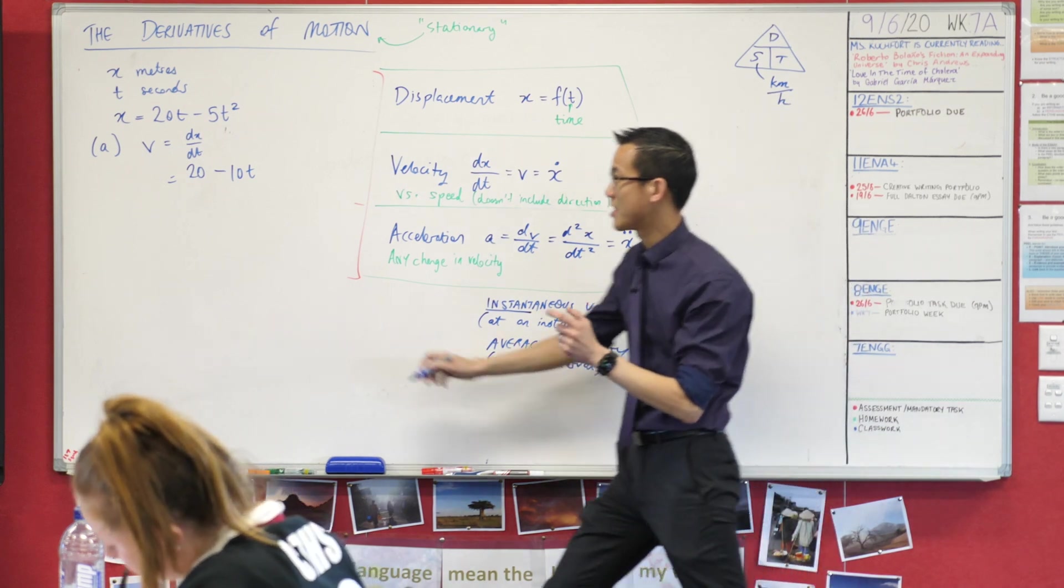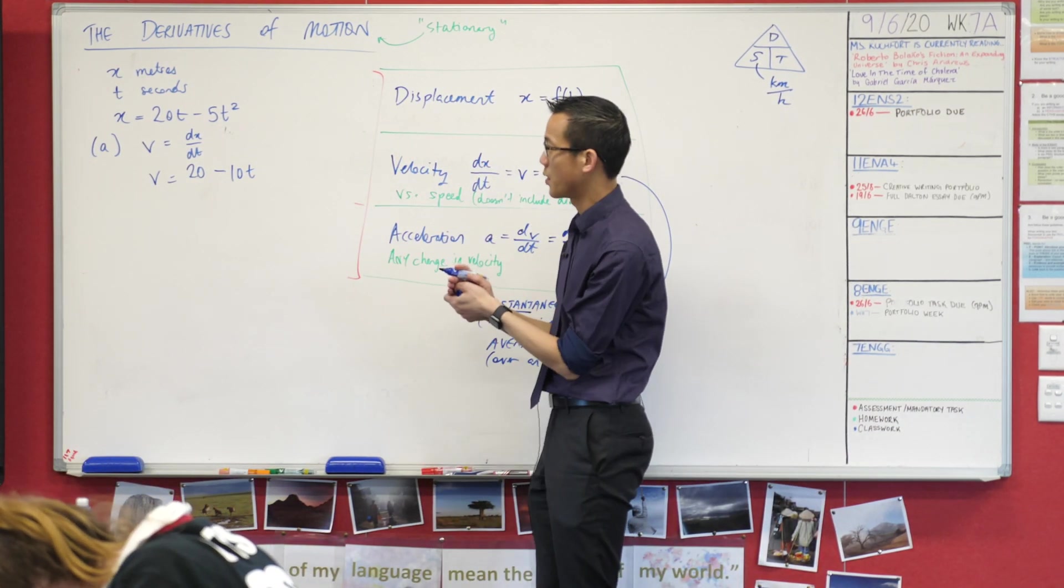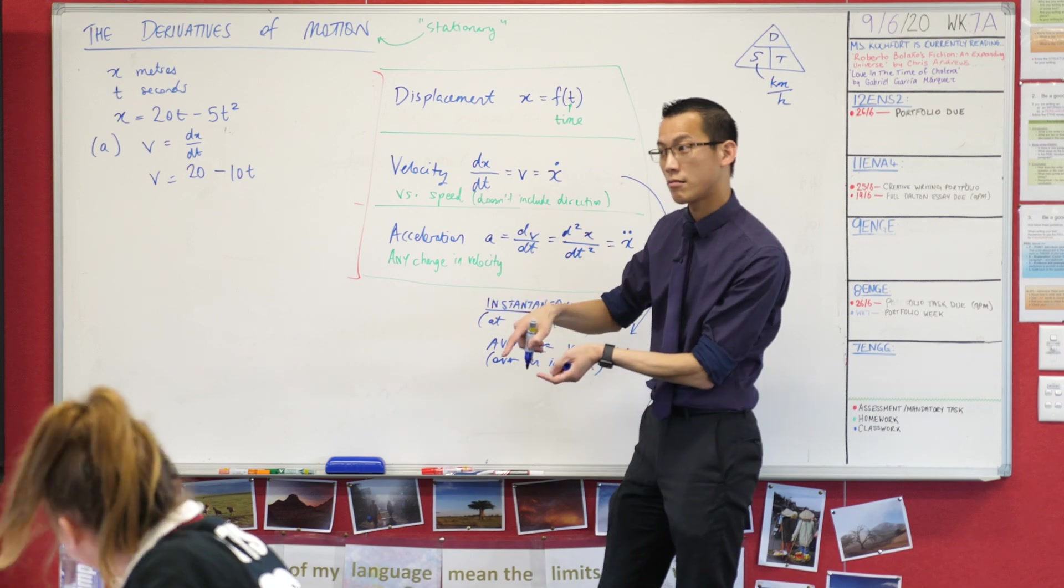So there's x, can you help me differentiate with respect to t? What am I going to get? 20, fantastic. Take away 10t, excellent. So I've differentiated with respect to time once. There's my velocity function as requested.